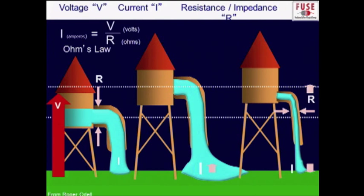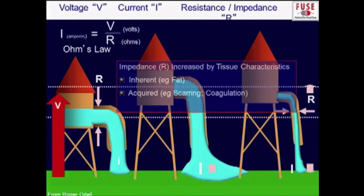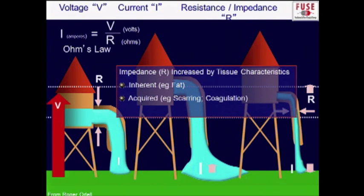What does this have to do with operating? When working in highly impedant tissue like fat, your generator may not be as effective. High impedance can also result from scarring due to previous surgery, previous injury, or scarring you induce yourself — tissue you've already coagulated on the gallbladder bed, for example, becomes highly impedant.